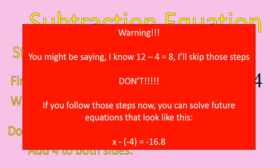Again, you might say, I know 12 minus 4 is 8. I've been able to do all these problems in my head. Why can't I just skip these problems? Now, look at the question at the bottom. x minus negative 4 is equal to negative 16.8. I don't think you can do that one in your head. If you can, that's great. But the equations become even more complicated than that. So following the steps, following the steps that I list, you will be able to solve every equation, and even if you can't do it in your head. So follow the steps. Even if it seems easy, I want you to follow the steps.